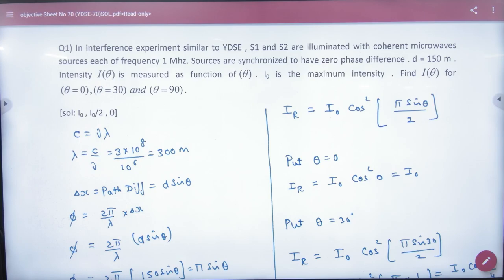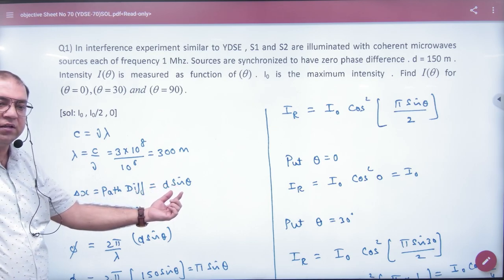After that, the value of d is given, intensity as a function of theta. If you remember, in the form of path difference theta, I had a topic last time. In the form of path difference theta, what is d sin theta.